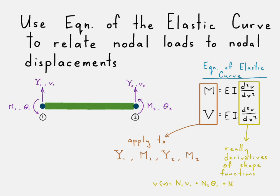These are really derivatives of the shape functions. Remember what our displacement function looks like: it's in terms of shape functions and their corresponding displacements and rotations. Those are just coefficients — it's n1, n2, n3, n4. Those are the cubic functions that get the derivative taken of them when we start applying this equation of the elastic curve.